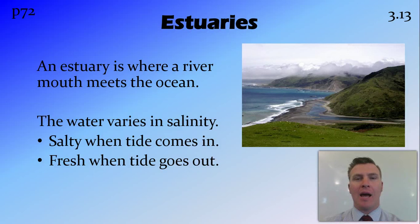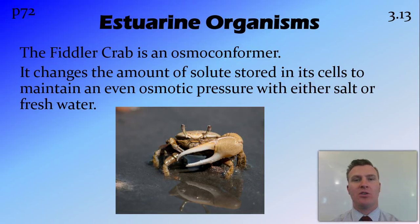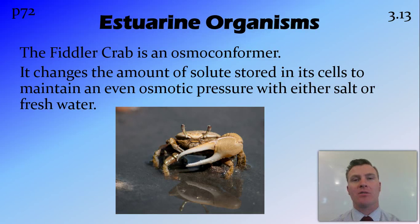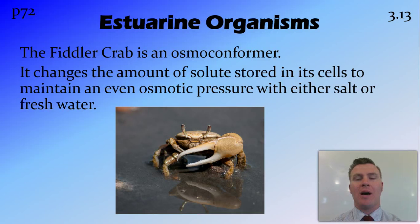There are two ways organisms can deal with this constant change. Osmoconformers that undergo antiostasis, such as the fiddler crab, actually change the amount of salt in their tissues to match the outside environment and maintain osmotic pressure. This is important because we don't want water moving into or out of the organism. Usually this change in salt concentration would cause enzymes to stop working, but enzymes in osmoconformers are generally more robust and perform over a larger range.